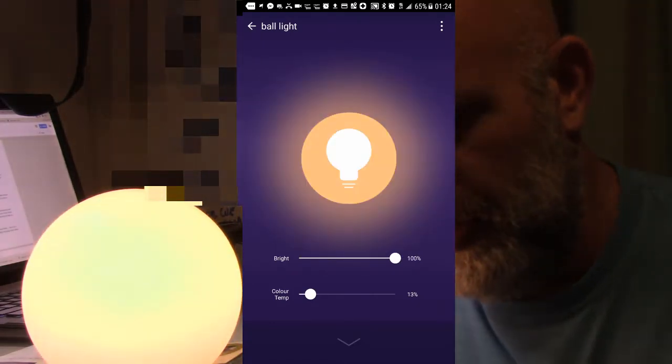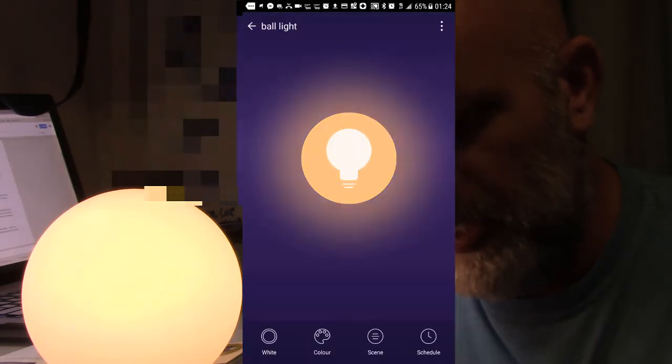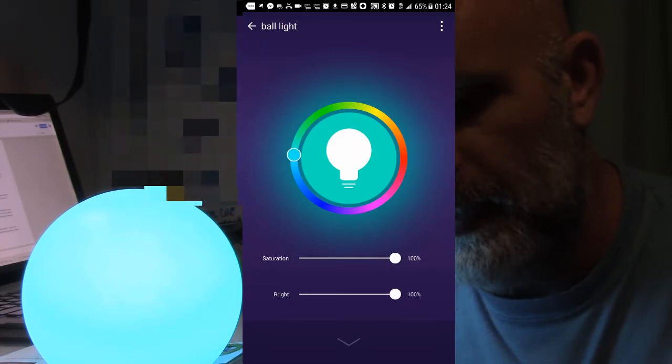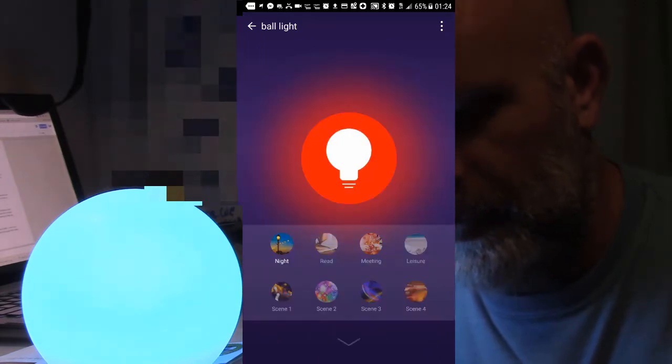See that? Pretty cool, huh? I'm going to go back here to ball light and you get your color palette. That's how I was changing it just a second ago, just going around like that, changing whatever I wanted. Let's see here, they've got some different scenes, I guess these are like pre-set colors.